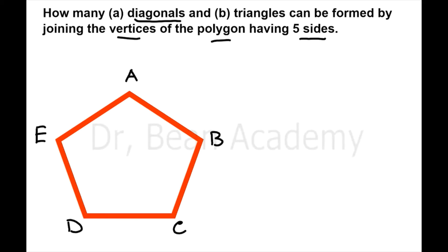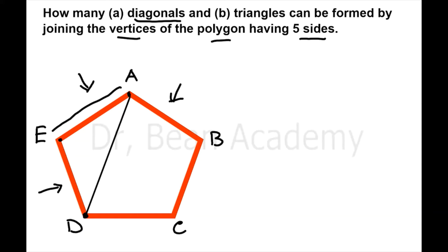Let's see what a diagonal is. A diagonal is a line formed by joining two vertices of a polygon, with the condition that those two vertices should not be on the same side. For example, A and E are on the same side, so that is not a diagonal. But if I join A with D, they are on different sides, so that black line is a diagonal.